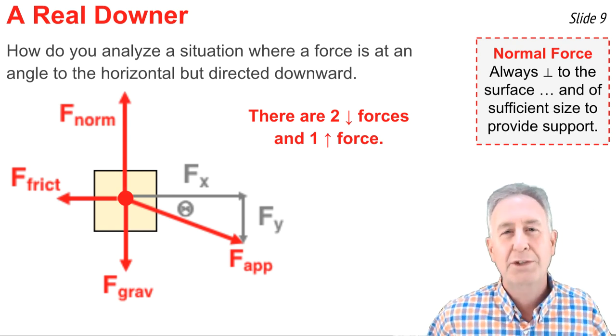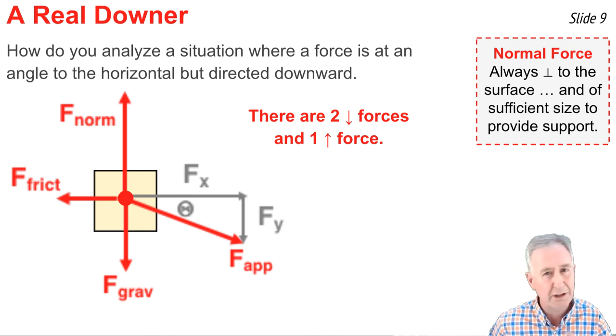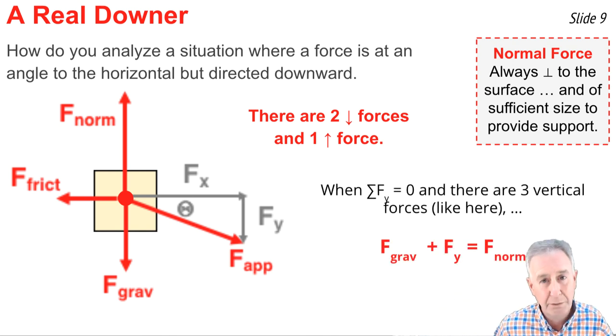And you see it there. So when we have this situation or any situation in which the object accelerates horizontally, I know that the vertical forces must sum to zero. They must equal zero when you add them up. And if there's three vertical forces, then the F norm and the F grav are not equal to each other. And in this case, with the two downward forces, the F norm has to be of sufficient size to support those two downward forces. So we would say F grav plus Fy equals F norm.